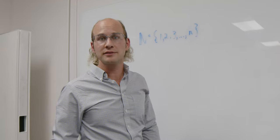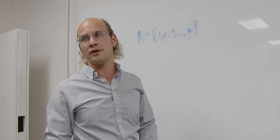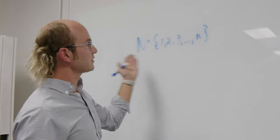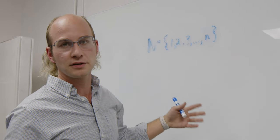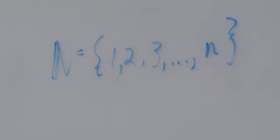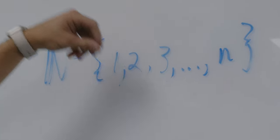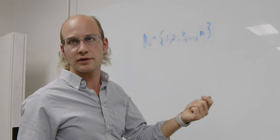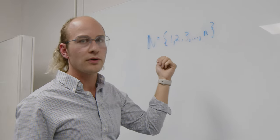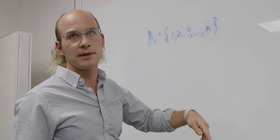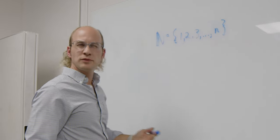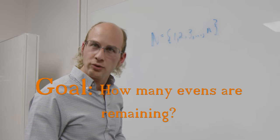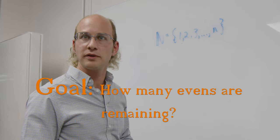Today we're going to be looking at iterative disposal processes. We have a set of naturals and we're going to apply these iterative disposal processes to it. We'll stick our hand into the set, pull out a number, and look at whether that number is even or odd. If it's even, we throw it out; if it's odd, we put it back. How many times do we repeat this? Exactly as many times as there are natural numbers. How do we solve something like that?